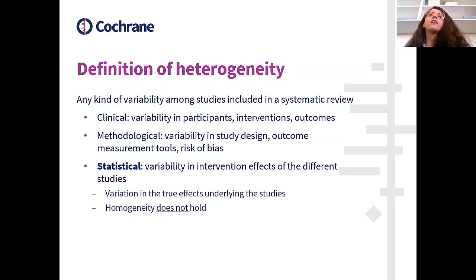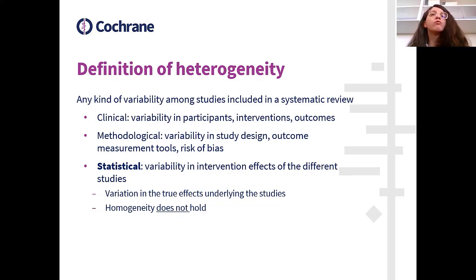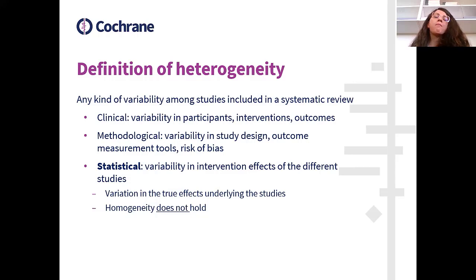Heterogeneity is any kind of variability among studies included in a systematic review. We might have differences in clinical aspects such as participants, interventions, and outcomes; we might have methodological differences such as study design, outcome measurement tools, and risk of bias; and we have statistical heterogeneity, which is the variability in intervention effects across different studies. Statistical heterogeneity exists because there is variation in the true effects underlying the studies, so the assumption of homogeneity does not hold.